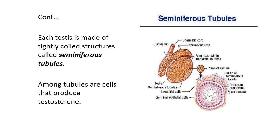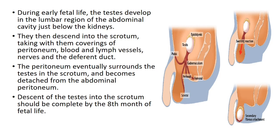Each testis is made up of tiny coiled structures called seminiferous tubules. Among these tubules are cells that produce testosterone, the male sex hormone.